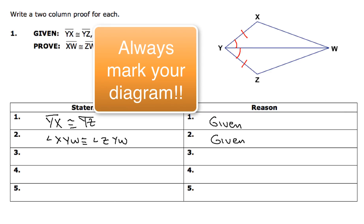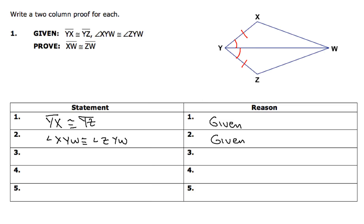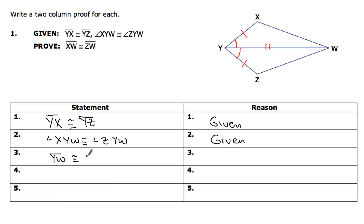That's giving me a little bit of information to go on. When I look at that picture, I'm starting to see some things come together. The next piece I want to look at is this YW piece. That piece is going to be congruent to itself. So I've got to make two congruent hash marks on it, and it's going to be congruent to itself by the reflexive property of segment congruence. So I'm going to write that YW is congruent to YW.